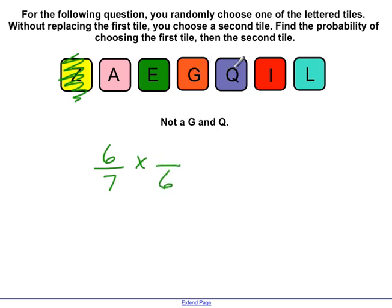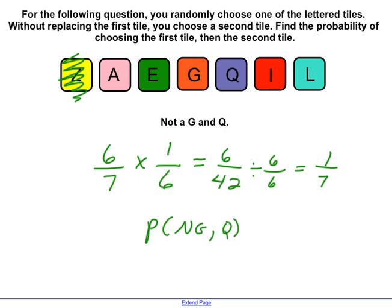And a Q. So there's only one Q in there. So then you multiply straight across, and you get six over 42. And if you reduce this by six on the top and the bottom, you get one over seven. And if you were to write that in P event, it would be P, not G, comma, Q, end of parentheses, one seventh. And that would be your answer. One in seventh chance of pulling a not a G and then a Q.